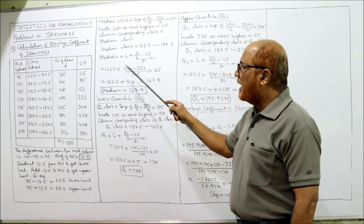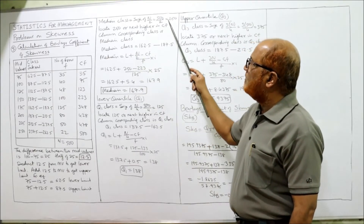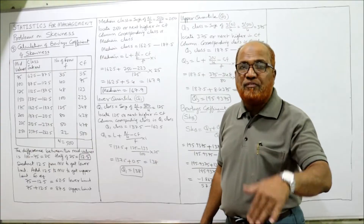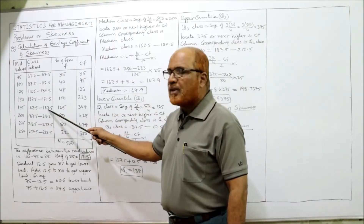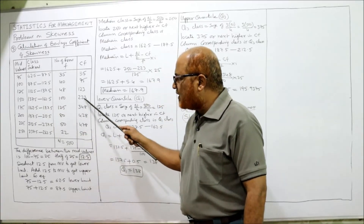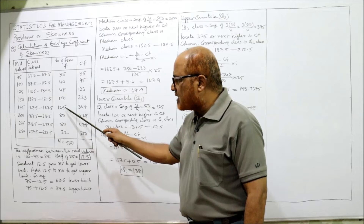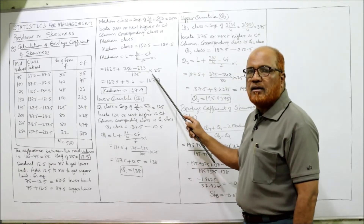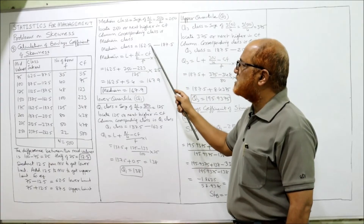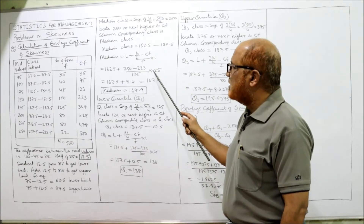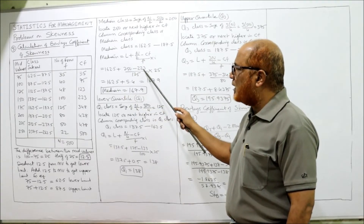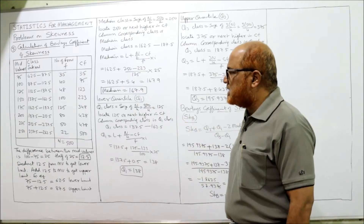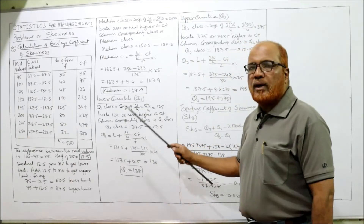Applying the median formula: Median = L + [(n/2 − cf) / f] × i. Here L = 162.5, n/2 = 250, cf (preceding class CF) = 223, f (frequency of median class) = 125, and i = 25. So: 162.5 + [(250 − 223) / 125] × 25 = 162.5 + 5.4 = 167.9. The median is 167.9.